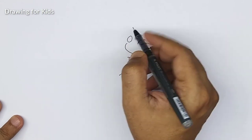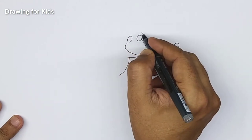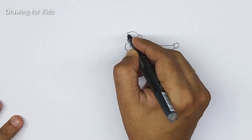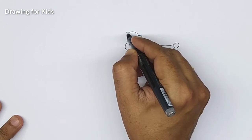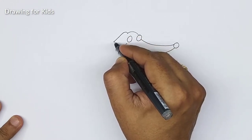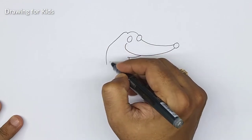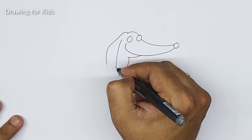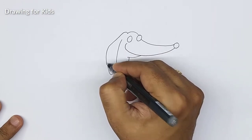And then we'll make the legs there. Okay, let's make this proportion. His ears. This is the ear, like this.